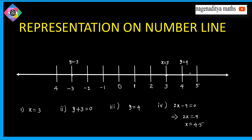So x equals 4.5 lies between 4 and 5 on the number line. We mark the point at 4.5 for the equation 2x minus 9 is equal to 0.